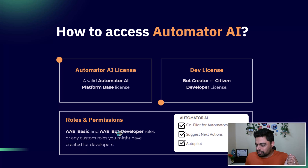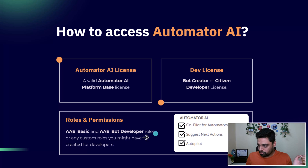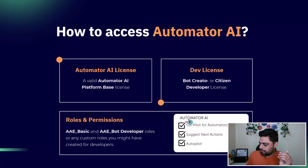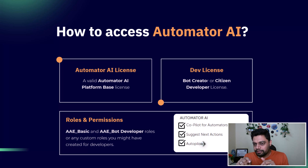The basic and bot developer roles are system-generated roles. If you are working with custom roles for your COE and have created custom roles for your developers, open one of those roles and go to the bottom of the role permissions. You can find Automator AI as a header and check all three options: Copilot for Automators, Suggest Next Action, and Autopilot. There is one more setting — if you go to the admin section of your control room, there is a setting called Automator where you can enable Autopilot and Copilot for everyone.